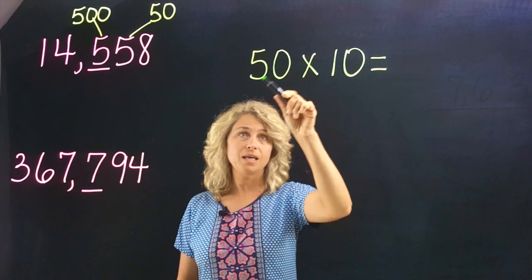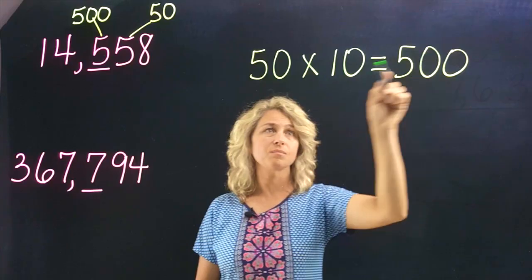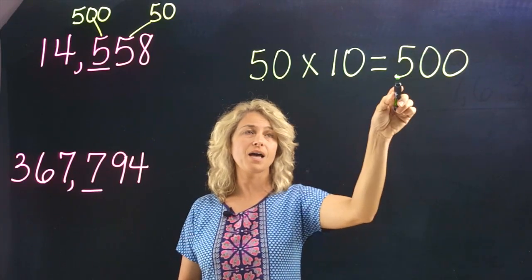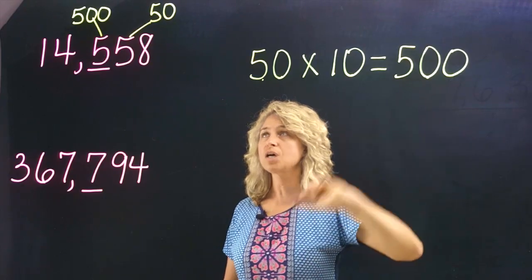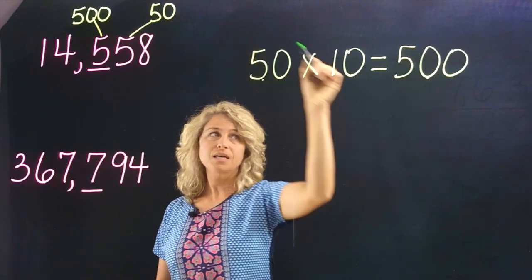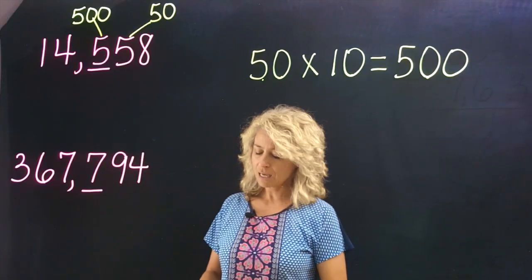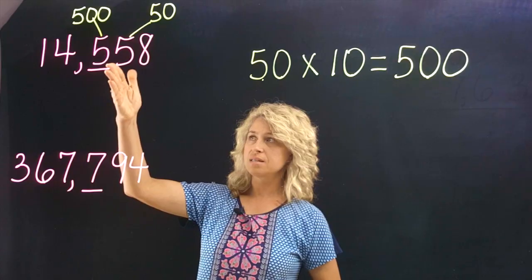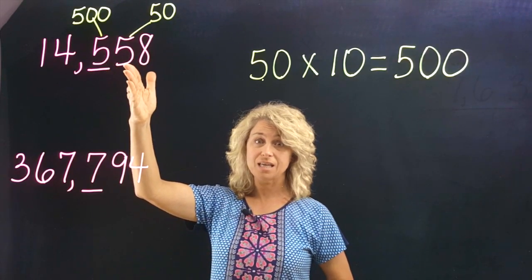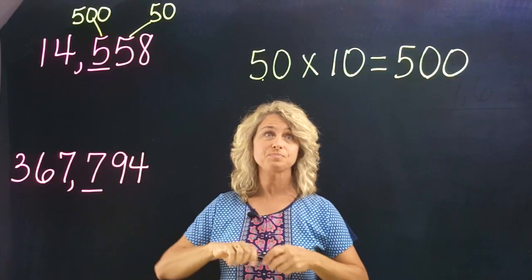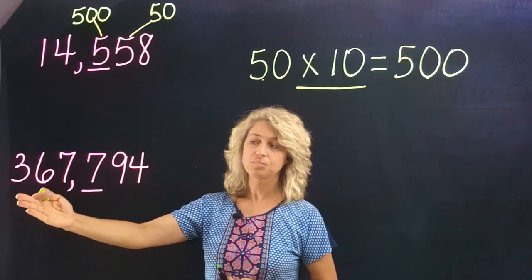You can do this mentally. Anything times 10 just adds a zero to the end. One times five is five and we have two zeros, so 50 times 10 is 500. So if I ask the question, how many times greater is the five in the hundreds place than the five in the tens place? You would say times 10.